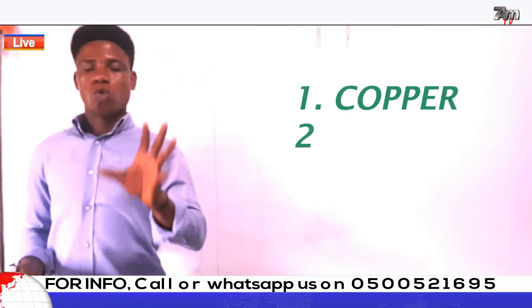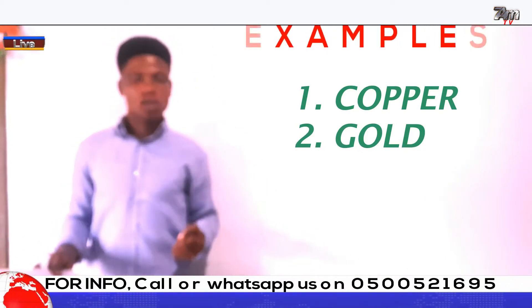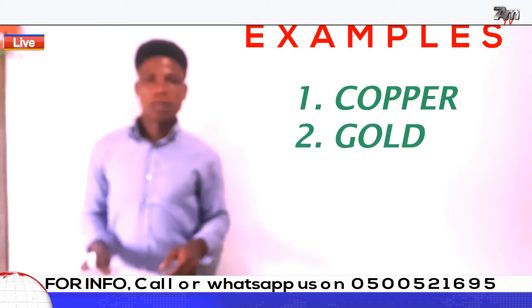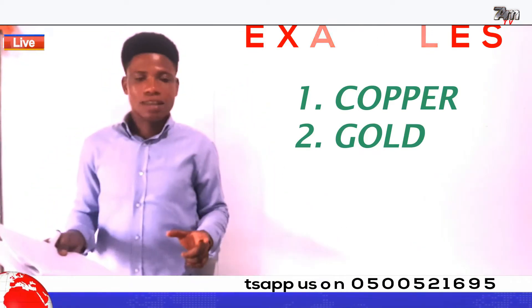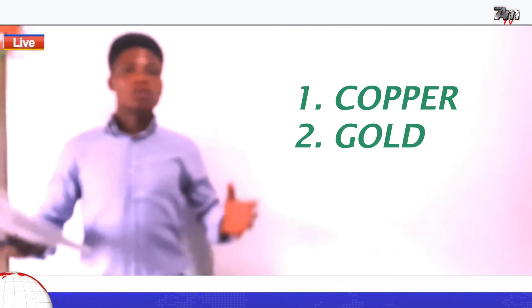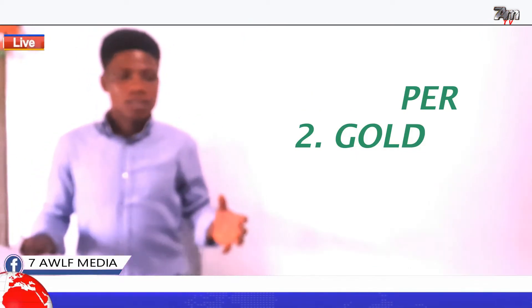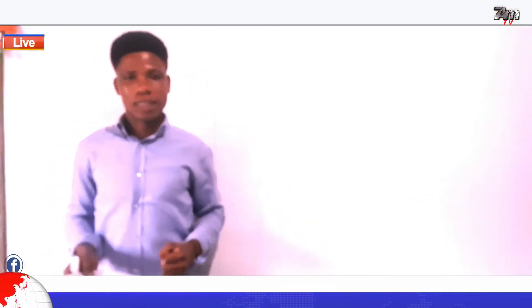The second example is gold. We all love to see and hold gold. Gold is a metal — it's a very nice material that we all love to get hold of one day.